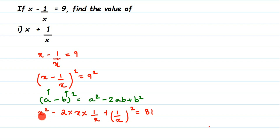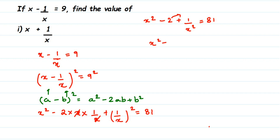In the first term we have x square. In the second term, x in the numerator and denominator cancel, so we get minus 2. The third term, 1 by x whole square becomes 1 by x square. So this equals 81. Now minus 2 is a constant — transposing it: x square plus 1 by x square equals 81 plus 2, which gives x square plus 1 by x square is equal to 83.